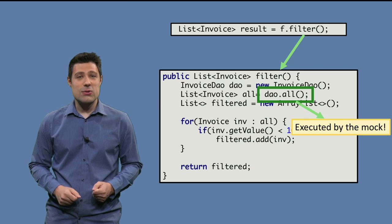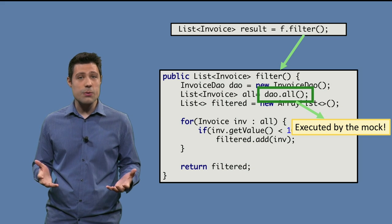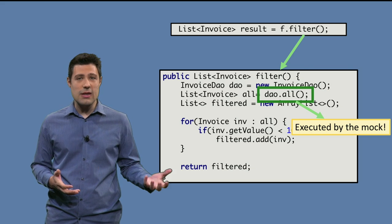What happens is, as soon as we execute a test, the filter method invokes the all method in the data access object, which is now a mock. And this means that this all will return the list we created in the tests, with the two invoices.